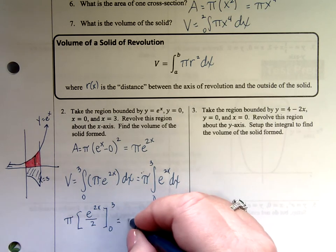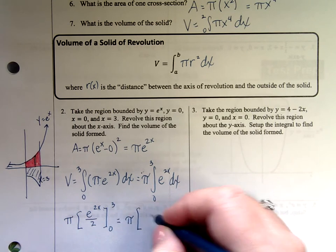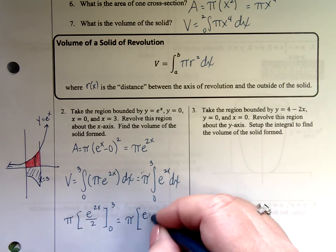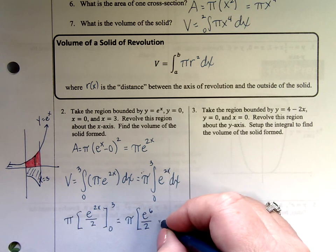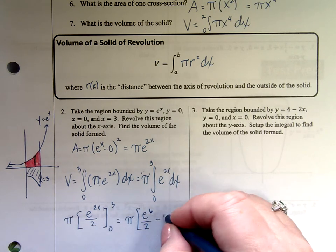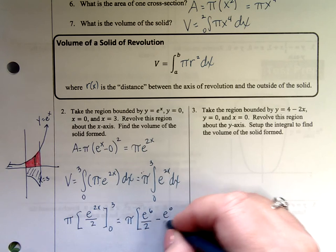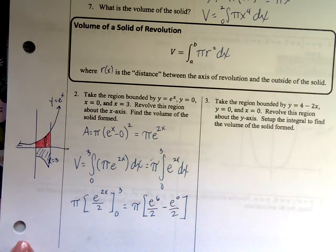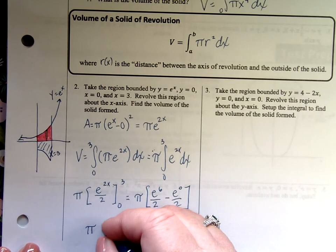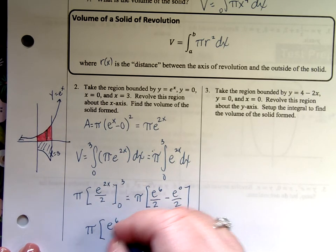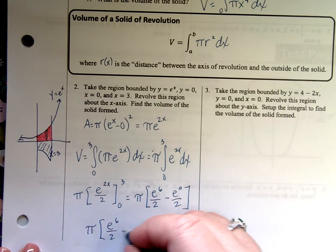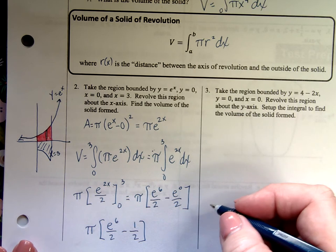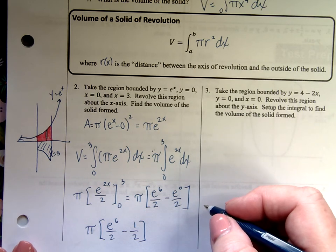Here I go. Pi is out there. This is going to be e to the 6th over 2, minus e to the 2 times 0 is 0, over 2. This one's not that bad. If I keep going, I'm going to leave it with e's and such. But pi e to the 6th over 2. What's e to the 0? You say 1 over 2. And really, there's my answer. A couple different ways I could write it, but that's it right there.